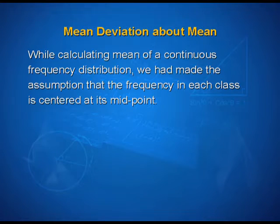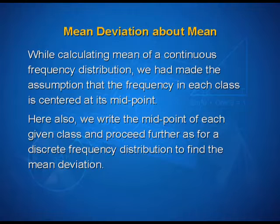Now, let us learn how to calculate the mean deviation about mean. While calculating the mean of a continuous frequency distribution, we make the assumption that the frequency in each class is centered at its midpoint. Here also, we write the midpoint of each given class and proceed further as for a discrete frequency distribution to find the mean deviation.